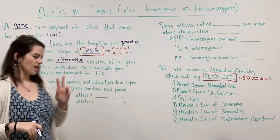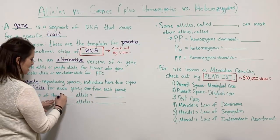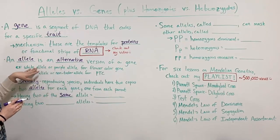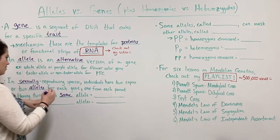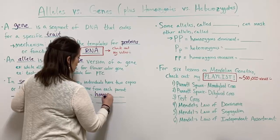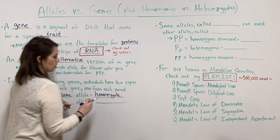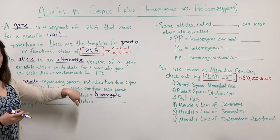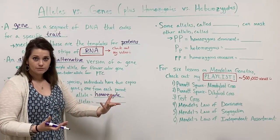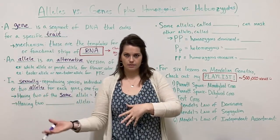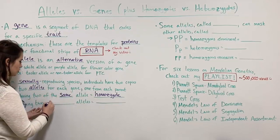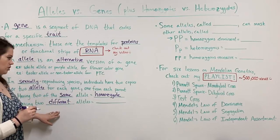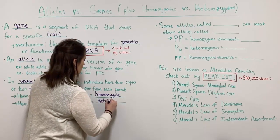If an individual has two of the same allele — for example, two taster alleles, or a pea plant with two white alleles — that is known as being a homozygote.